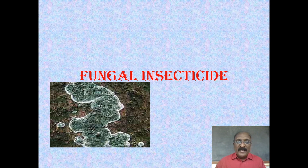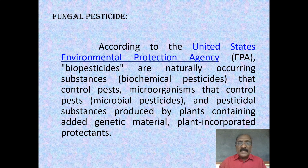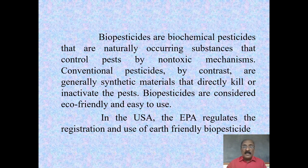Welcome back. This is the second part on fungal insecticides and fungal pesticides. According to the United States Environmental Protection Agency (EPA), biopesticides are naturally occurring substances — including biochemical pesticides that control pests, microbial pesticides, and plant-incorporated protectants. Biopesticides or biochemical pesticides control pests by non-toxic mechanisms, whereas conventional pesticides are generally synthetic materials that directly kill or inactivate the pest. Biopesticides are considered eco-friendly and easy to use, and in the US the EPA regulates their registration and use.